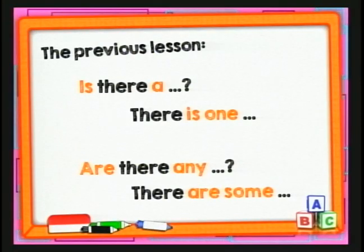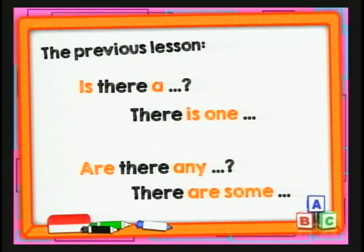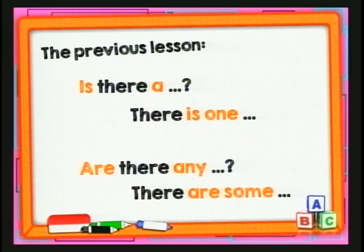Ese es el tema que habíamos visto anteriormente. Para preguntar sobre un lugar hacíamos así: 'Is there a.' ¿Qué quiere decir? En español quiere decir 'hay.' Is there a, por ejemplo, is there a bank — hay un banco. Si hay un banco por aquí: is there a bank. Recuerden que esta pregunta se la realiza si es singular. Y para responder decíamos 'there is one' — es decir, hay uno por aquí.